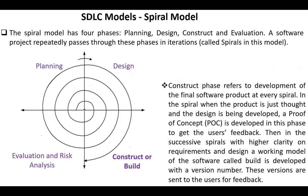In this spiral, when the product is just started and the design is being developed, a proof of concept (POC) is developed in this phase to get the user's feedback. Then, in the successive spirals, with higher clarity on requirements and design, a working model of the software called a build is developed with a version number. These versions are sent to the users for feedback.